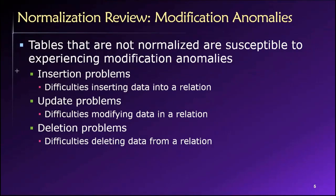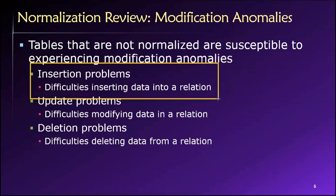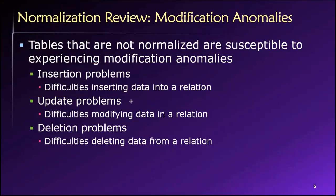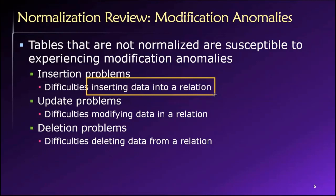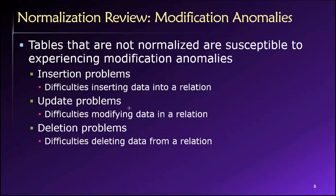There are three different types of modification anomalies. We have insertion anomalies or insertion problems. These occur when we try to insert data into a relation — that is, we try to add some additional information to the table — and in so doing, we create some kind of problem. With insertion anomalies, it's usually creating a bunch of empty cells where there really shouldn't be any, if we had a better design — so we're wasting space.